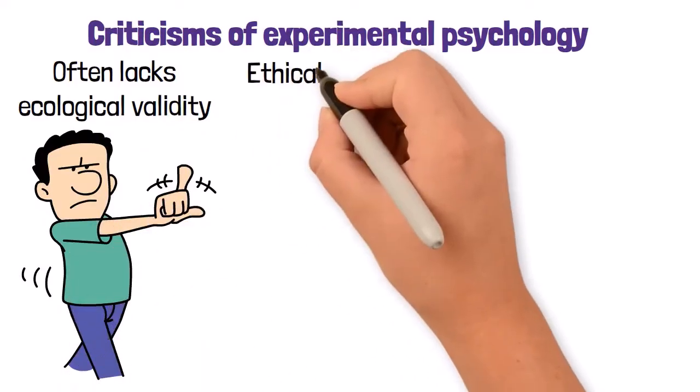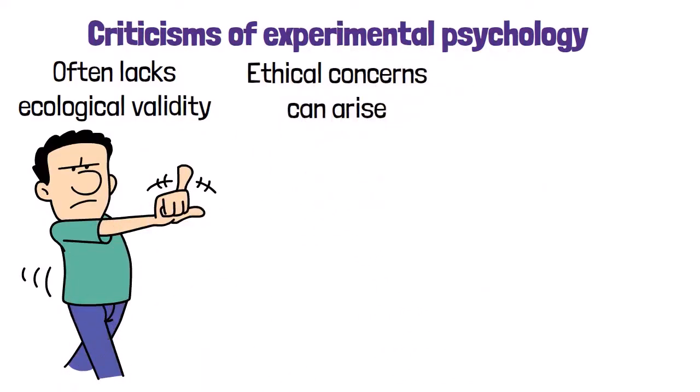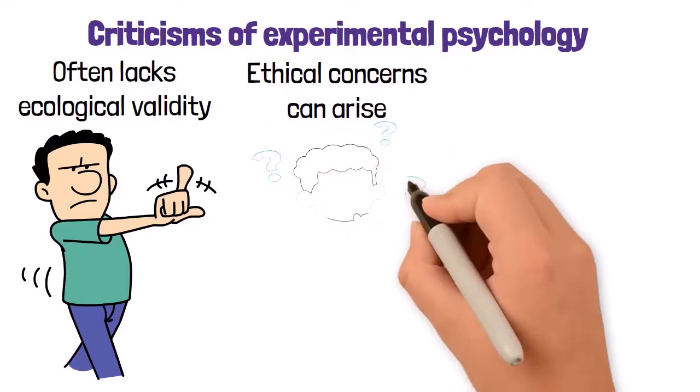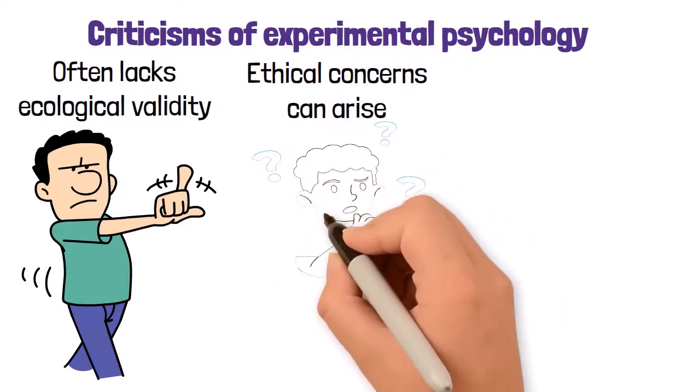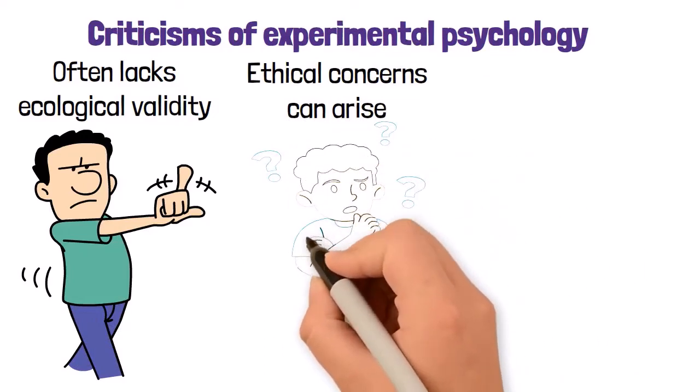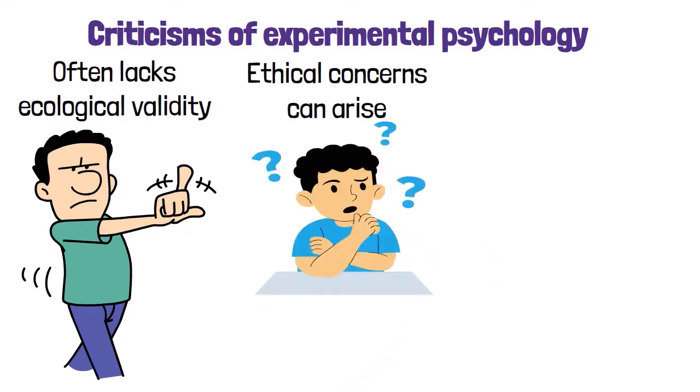Secondly, ethical concerns can arise. Some experiments may involve deception or manipulation of participants, raising questions about the ethical treatment of subjects. Ensuring informed consent and minimizing harm is crucial in psychological research.